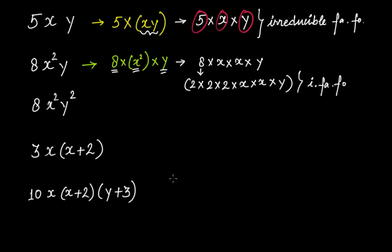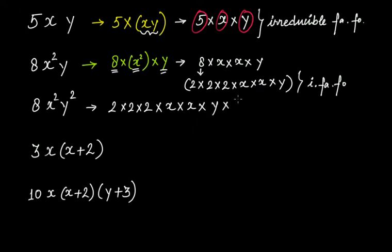What about 8X²Y²? Going by the same logic, the irreducible factor form is 2 multiplied by 2 multiplied by 2 multiplied by X multiplied by X multiplied by Y multiplied by Y. This is the irreducible factor form of the algebraic expression 8X²Y².